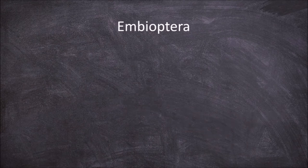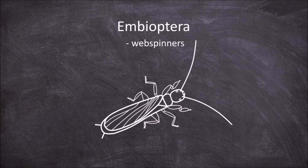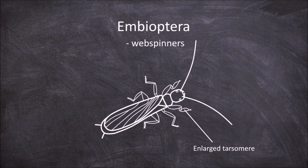The next order is the Embioptera, which are the web spinners. The characteristic feature of the Embioptera is the presence of an enlarged tarsomere on the first pair of short sturdy legs, which contain silk-producing glands. These are used to make their tubular silk galleries in which they live. Members of this order are all small and narrow in shape with sensitive cerci for backwards movement in the silk gallery tunnels.